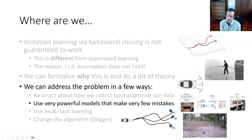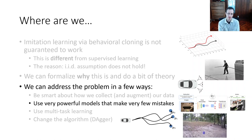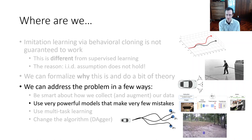That trick for getting behavioral cloning to work is not very reliable and takes a little domain-specific expertise, although it does provide guidance when collecting data for imitation learning. Keep in mind that having ways to put the system in states where the expert can demonstrate corrections can be very good, and it's also worth thinking about data augmentation tricks. But let's talk about some more technical solutions.